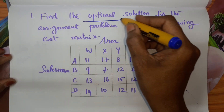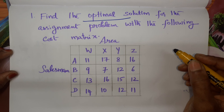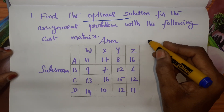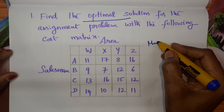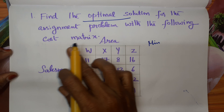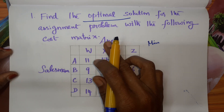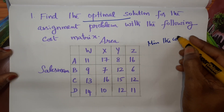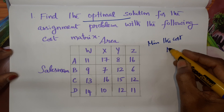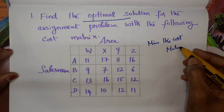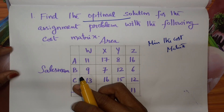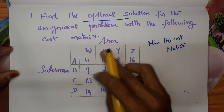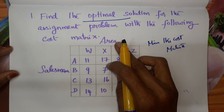What do you mean by optimal solution in AP? In order to minimize the cost matrix given, we have to minimize the cost matrix. 4 salesmen are given, and we have to assign salesmen to different areas.